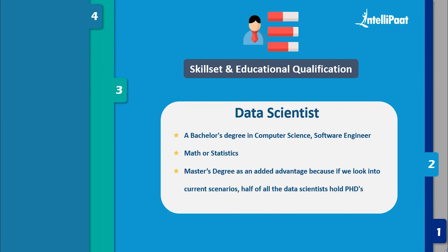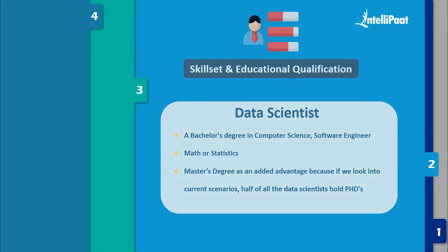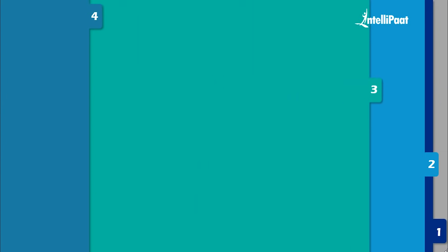As far as educational qualification is concerned, a bachelor's degree in computer science, software engineering, math, or statistics is preferred. However, a master's degree comes as an added advantage — looking at current scenarios, half of all data scientists hold PhDs.